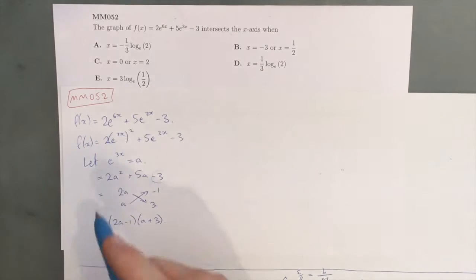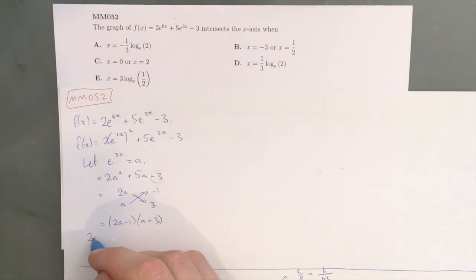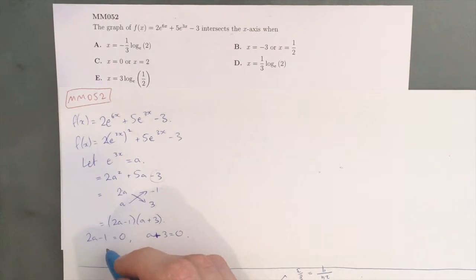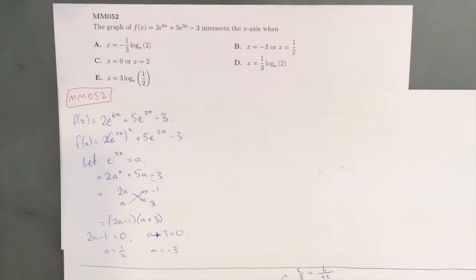So, from here, we can see that 2a - 1 = 0, and a + 3 = 0, which means that a = 1/2, and a = -3.